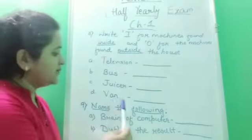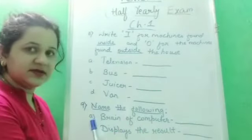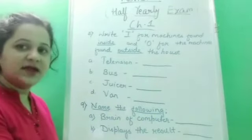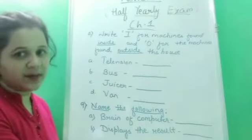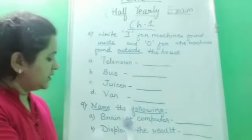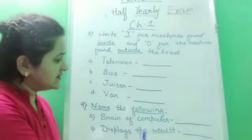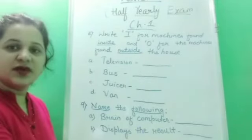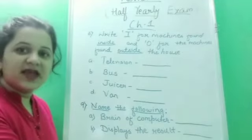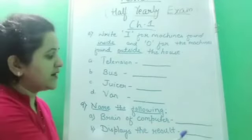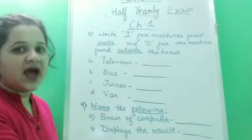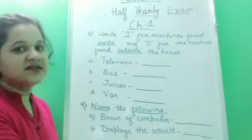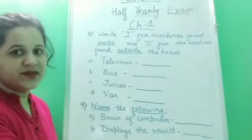Question number nine: name the following. Part A — brain of computer: which part of a computer is known as the brain? It is the CPU. Write down C-P-U in capital letters. Part B — displays the result: which part of a computer displays the result? It is the monitor. Write down 'monitor', M-O-N-I-T-O-R.